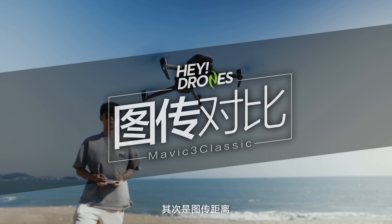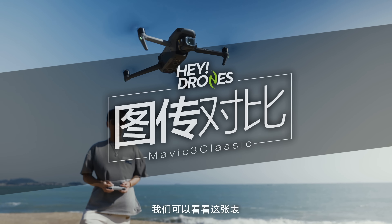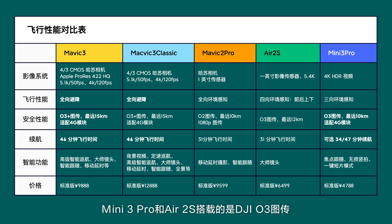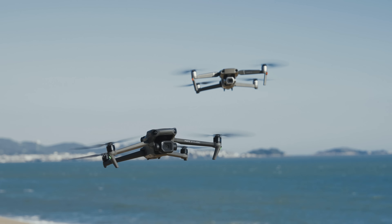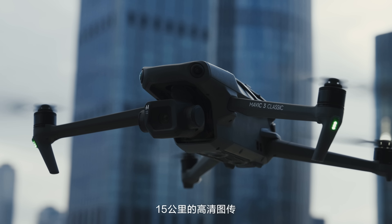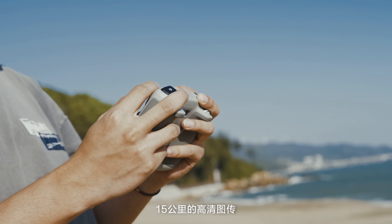其次是图传距离，我们可以看看这张表。Mavic 2 Pro搭载的是DJI O2图传，最远传输距离是10公里。Mini 3 Pro和Air 2S搭载的是DJI O3图传，最远传输距离是12公里。而Mavic 3 Classic搭载的是O3+，15公里的高清图传。